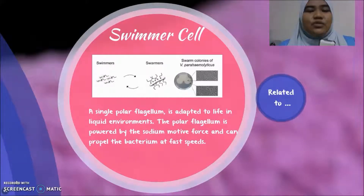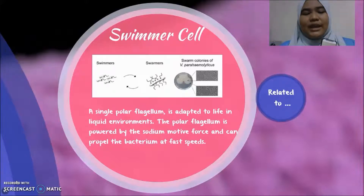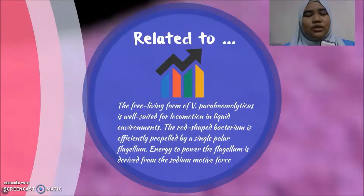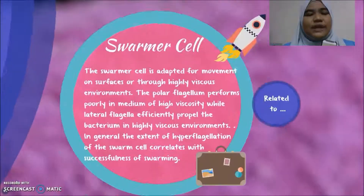Firstly, it is a swimmer cell. The swimmer cell has a single polar flagellum and is adapted to life in liquid environments. The polar flagellum is powered by the sodium motive force and can propel the bacterium at fast speeds. The rod-shaped bacterium is efficiently propelled by this single polar flagellum, with energy derived from the sodium motive force.